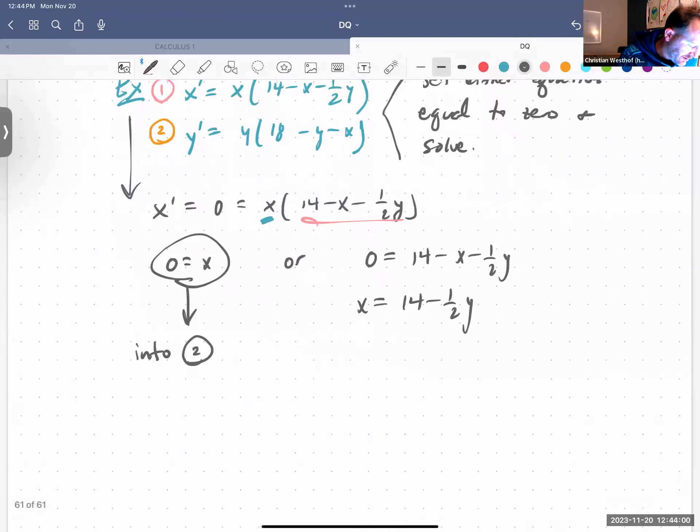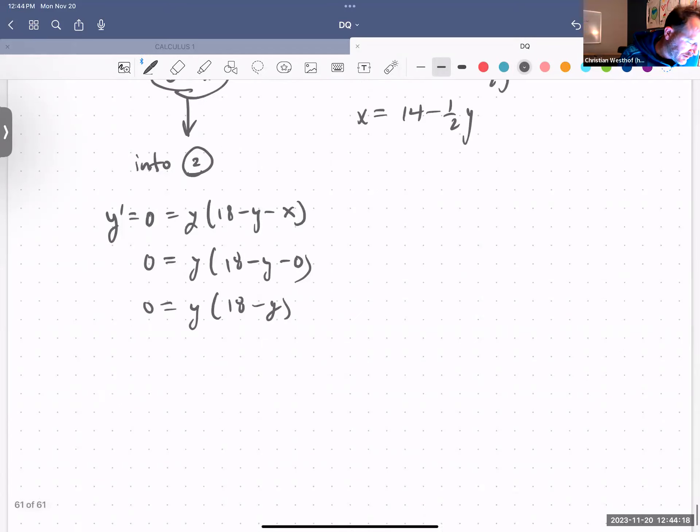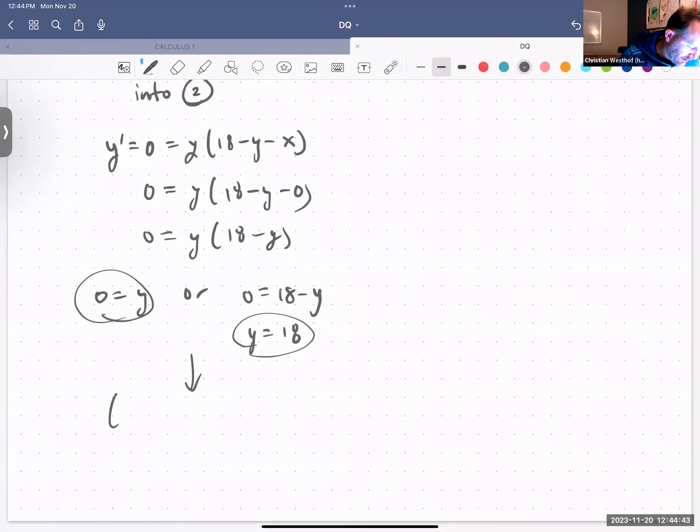And number two set to zero is y prime equals zero equals y times 18 minus y minus x. And we're plugging in x is zero. So we have zero is y times 18 minus y. That tells us that either zero is y or zero is 18 minus y. And in this case, y is 18. Okay, so when x was zero, we got two y values. So when x is zero, we get y is zero, and when x is zero, we get y is 18. So out of this side, we get when x is zero, a zero for y and an 18 for y.